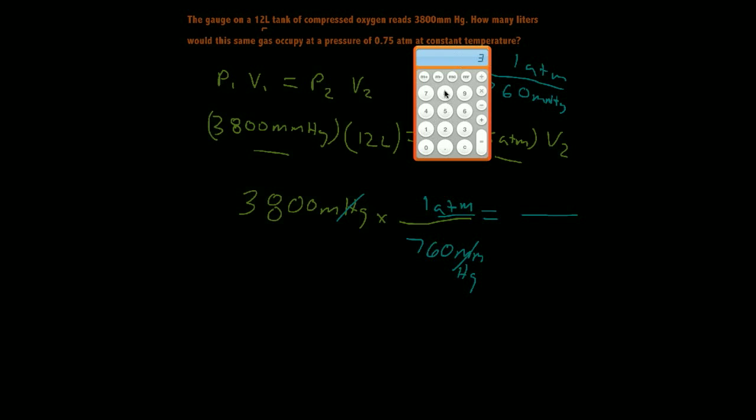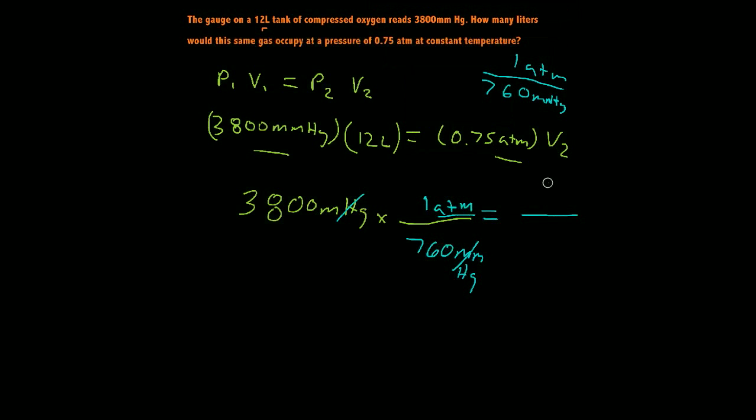All right, so 3,800 millimeters of mercury times 1 divided by 760, and that equals 5. So we have 5 ATM.